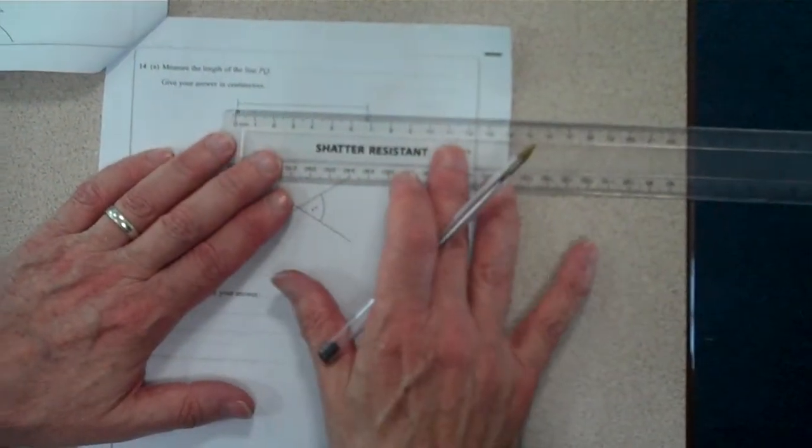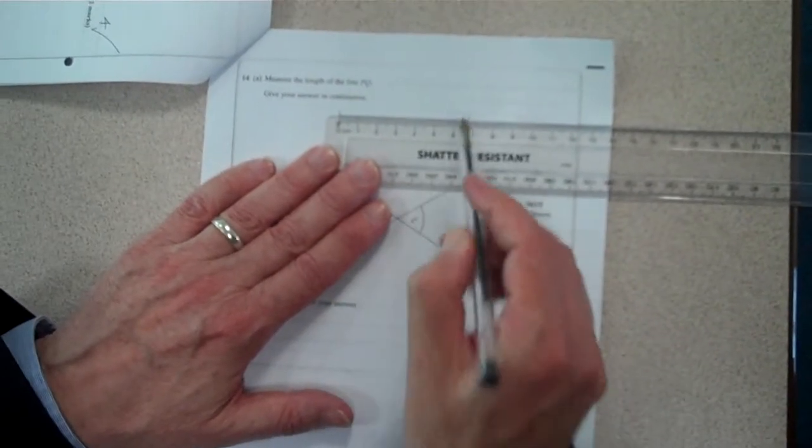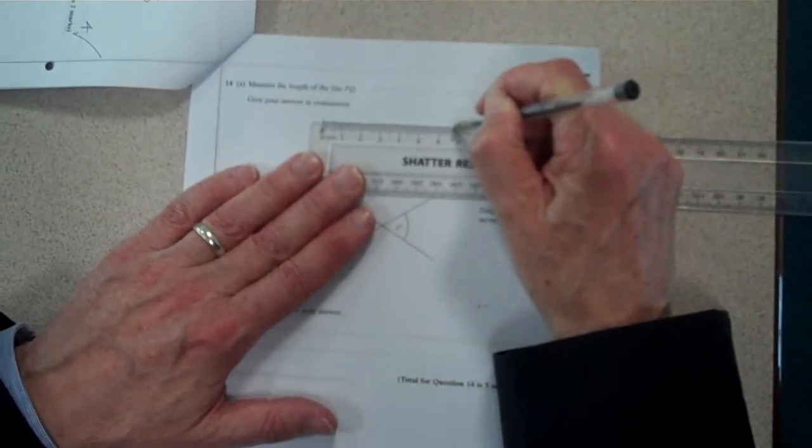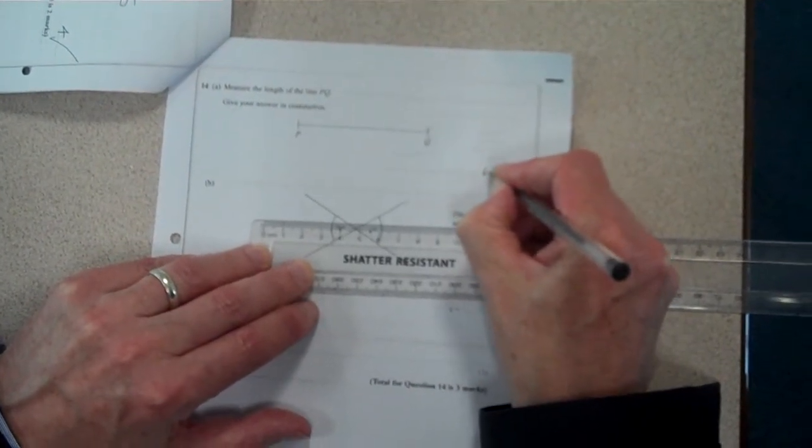So use the ruler, we make sure that we are lining up the zero on the P and it's between 6 and 7. We zoom in and as far as I can tell that should be 6.7 centimetres, so that's going to be my answer for the first one.